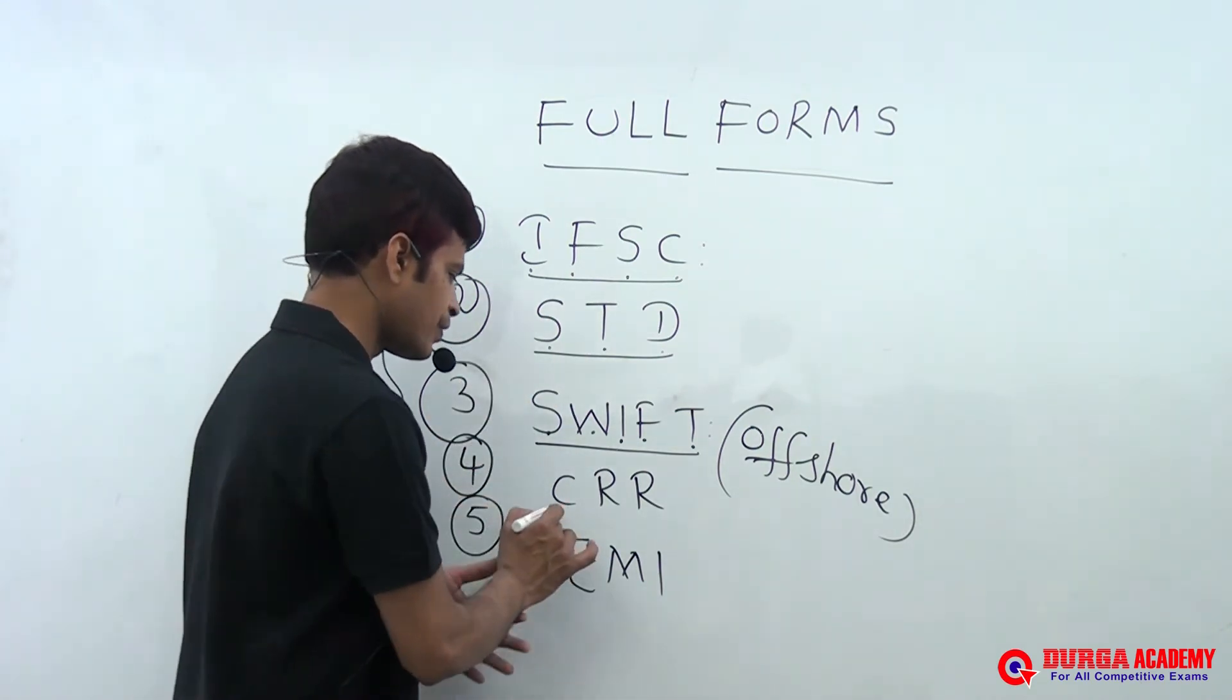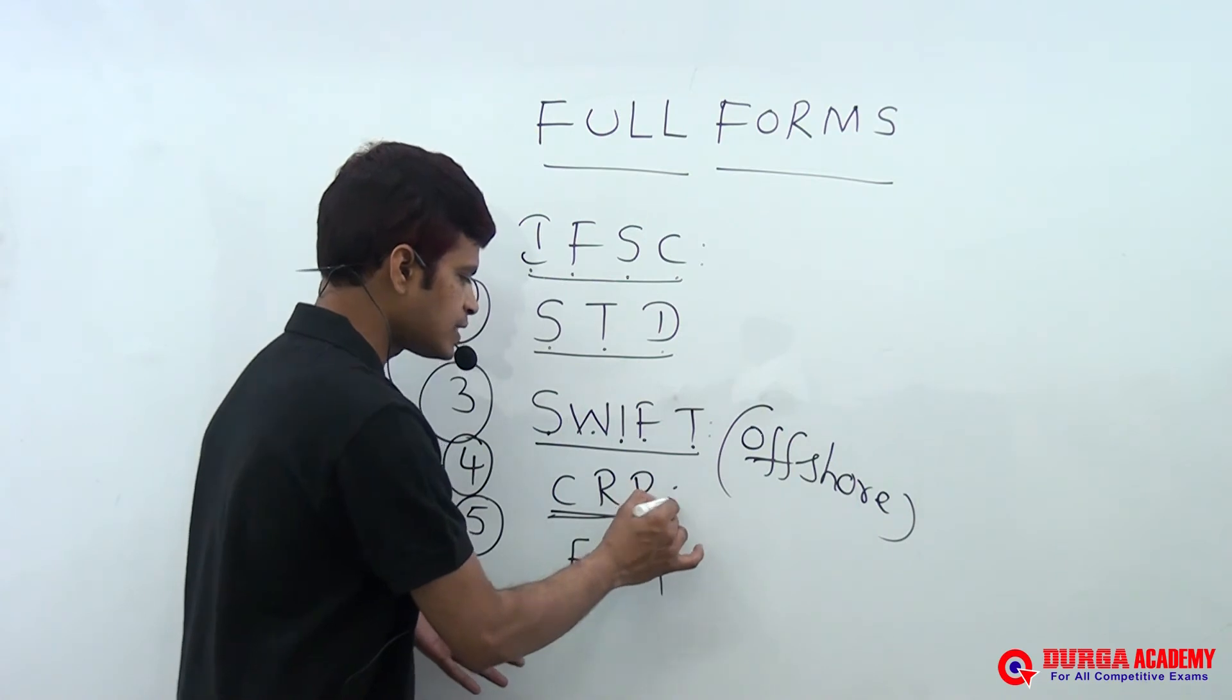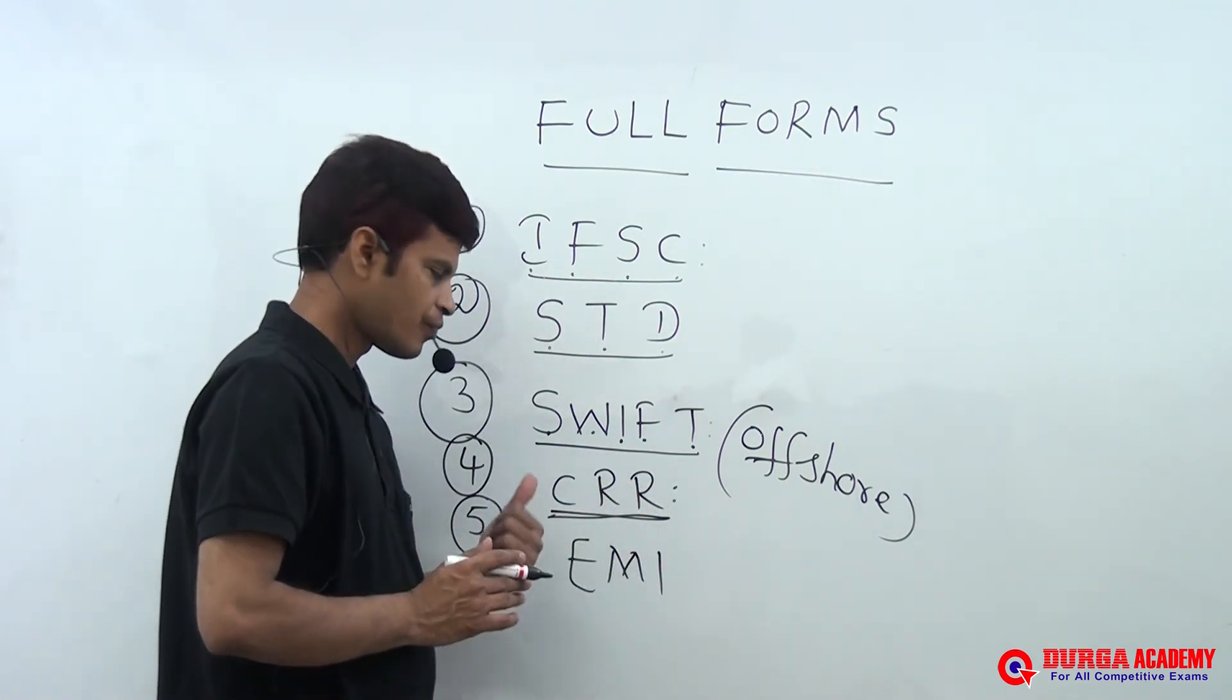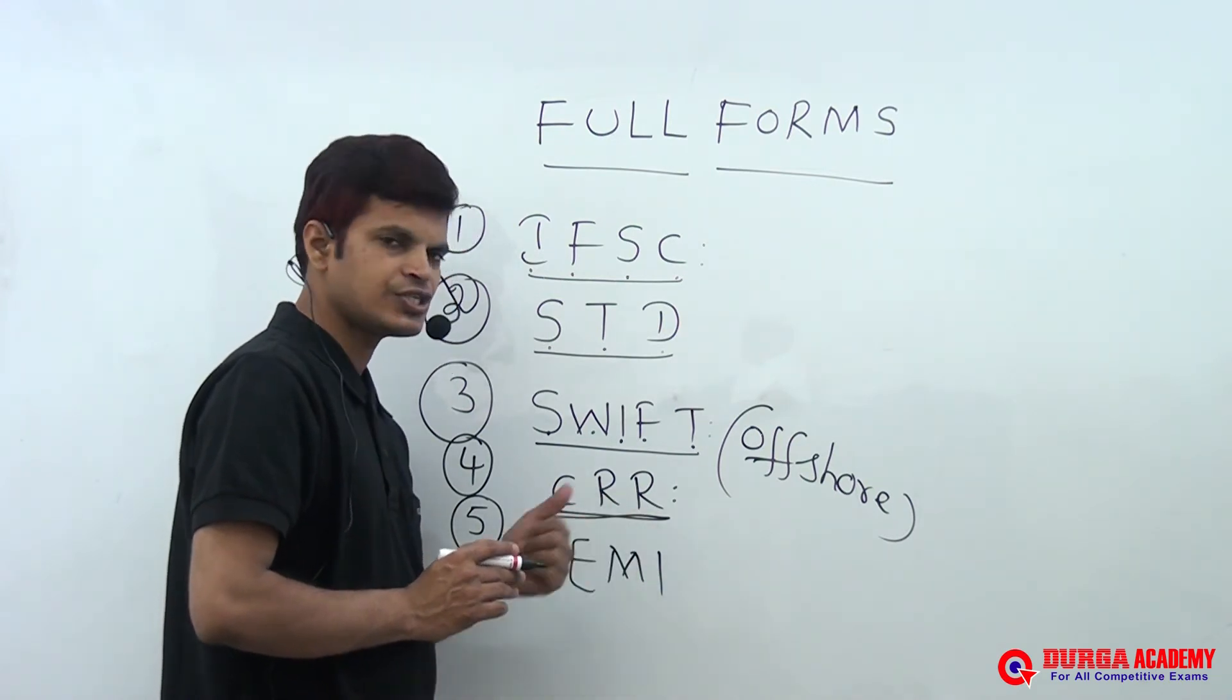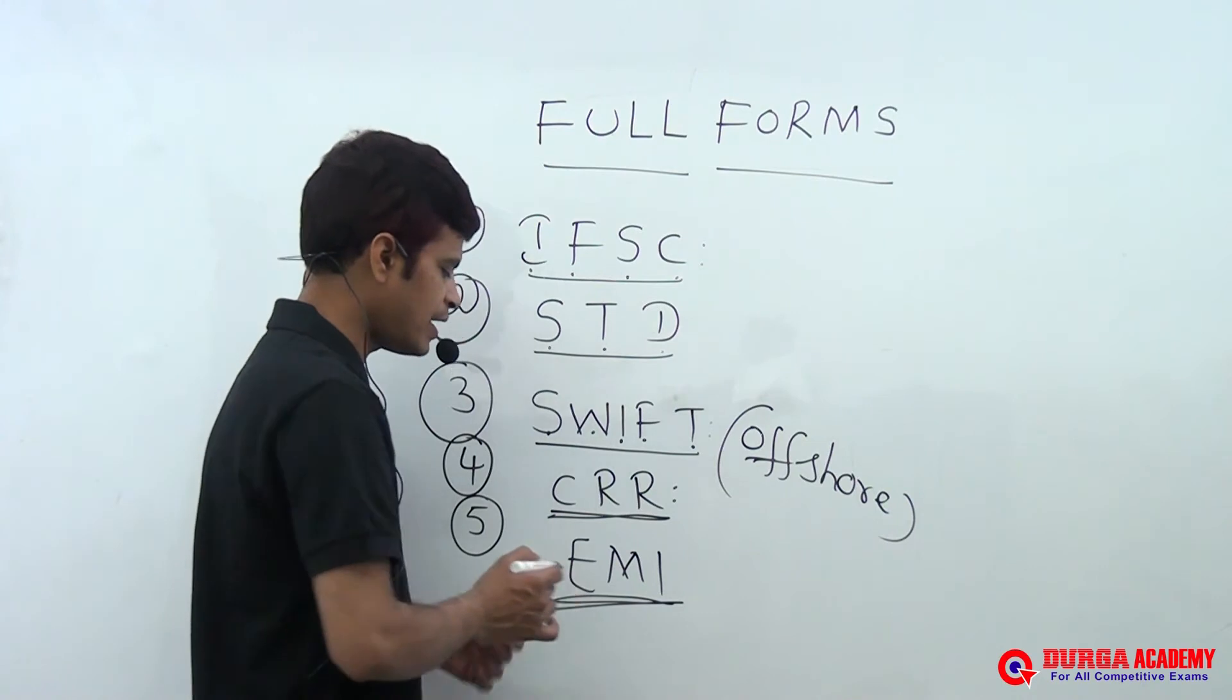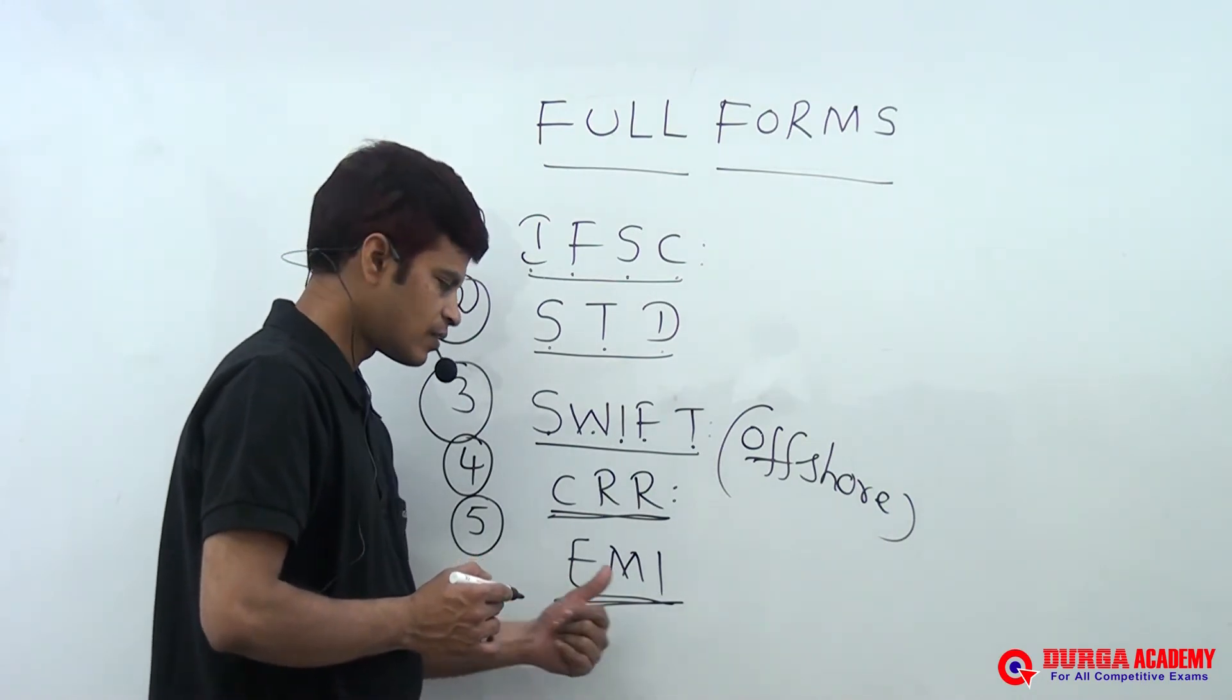CRR - what is CRR? Cash Reserve Ratio. Cash Reserve Ratio. Cash Reserve Ratio. What is EMI? Equated Monthly Installment. Equated Monthly Installment. Equated Monthly Installment.